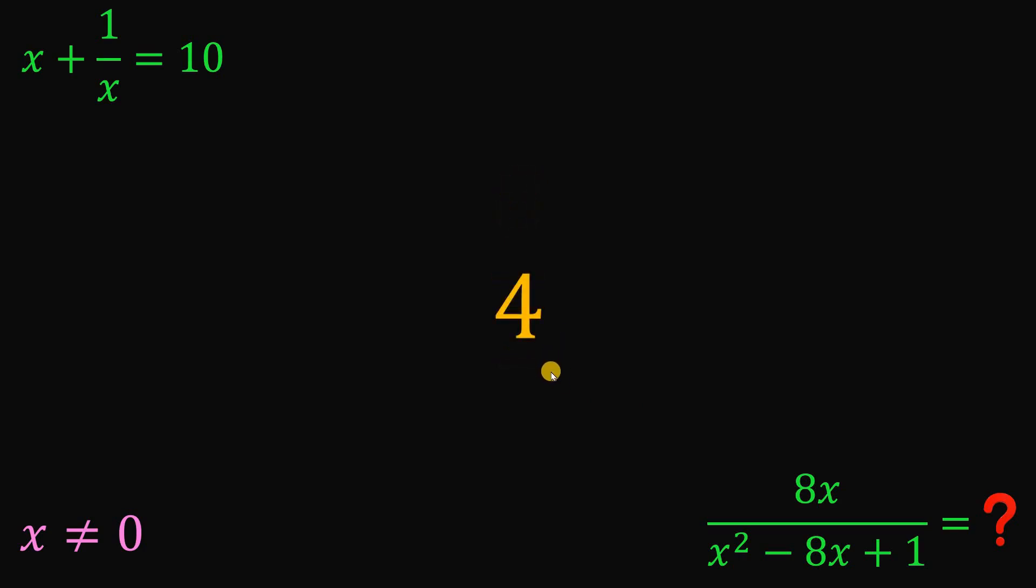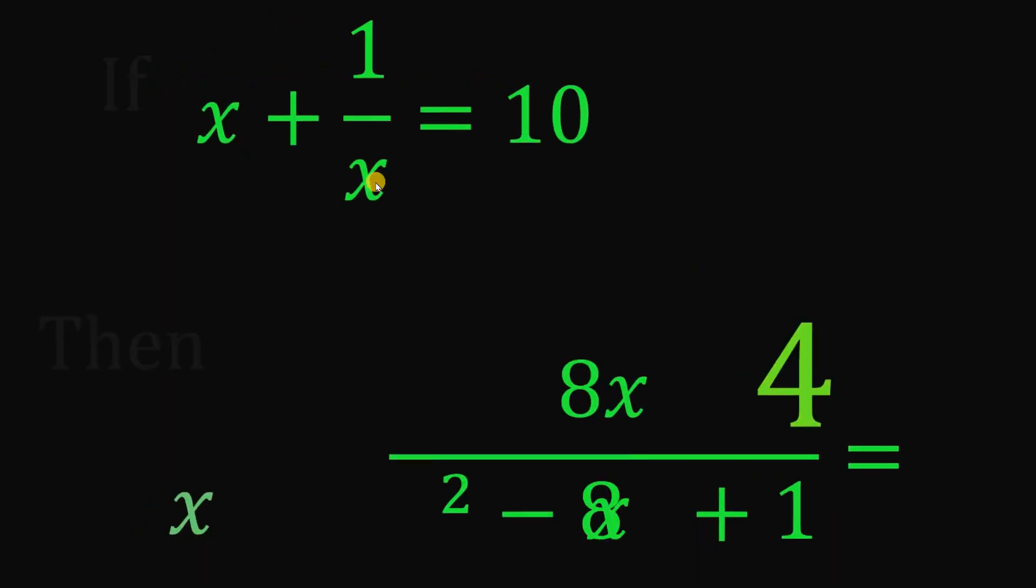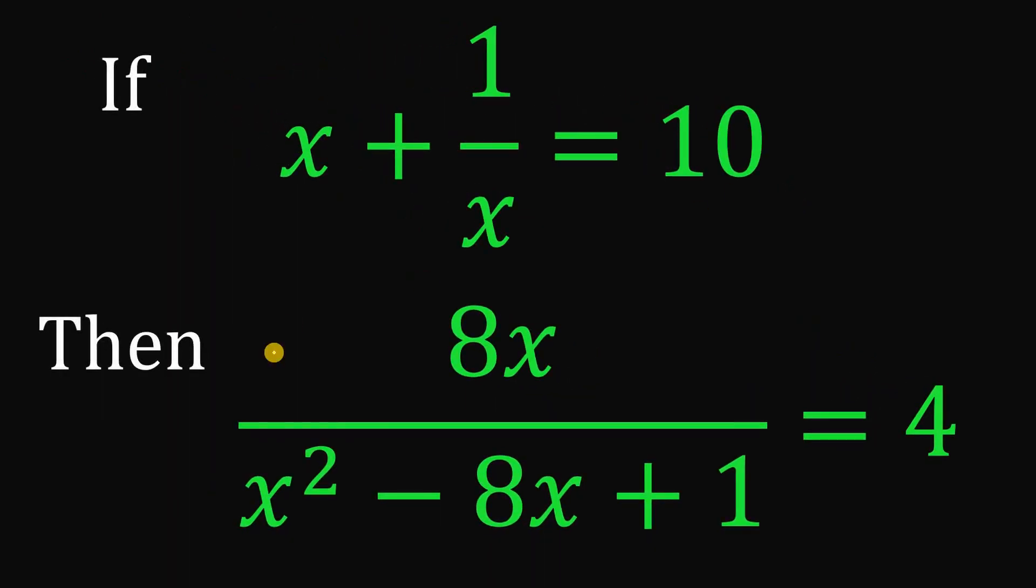And this is the numerical value of 8x over x squared minus 8x plus 1. So given that x plus 1 over x equals 10, then the numerical value is 4. And as always, we are done.